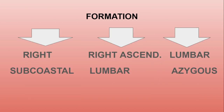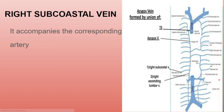The azygous vein is mainly formed by three veins: the right subcostal vein, the right ascending lumbar vein, and the lumbar azygous vein. We will discuss all three in detail.